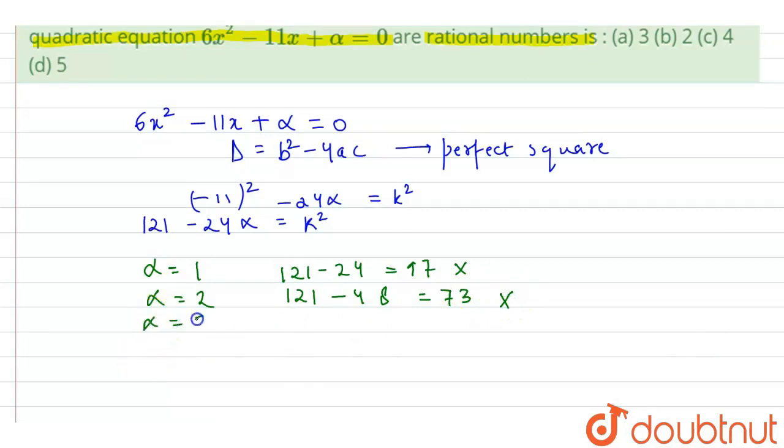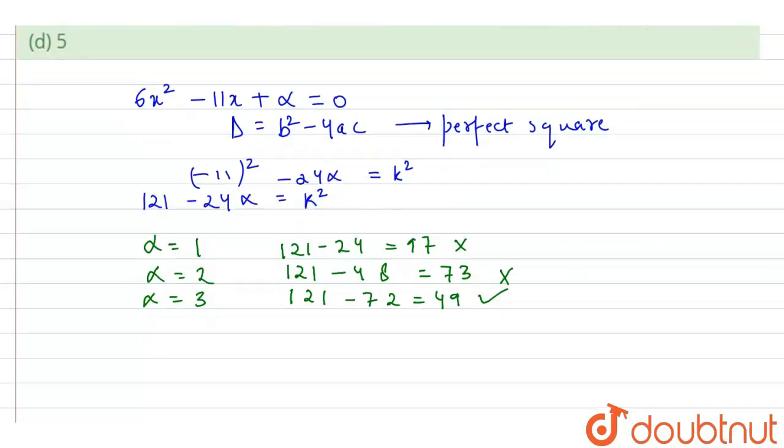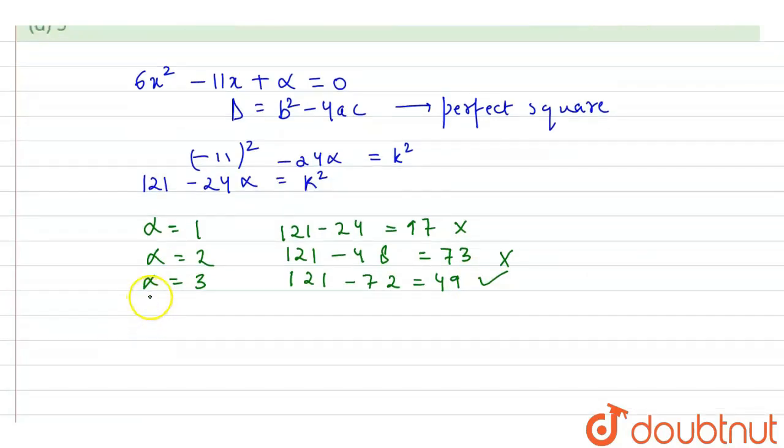Let's put alpha equals 3. We get 121 minus 72 which equals 49. So this is a perfect square. So alpha equals 3 is accepted.